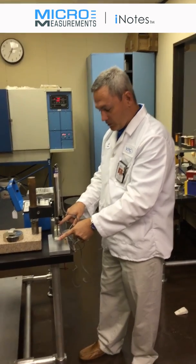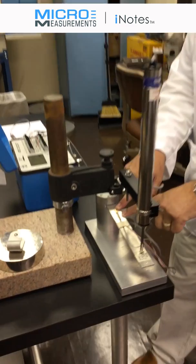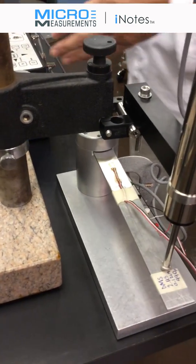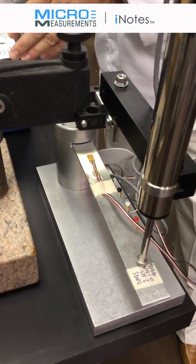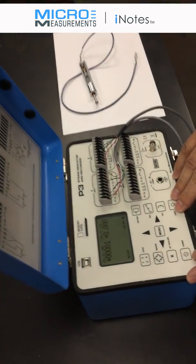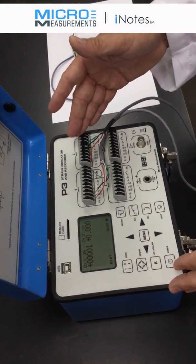I've also got one of our workshop beams that has one of our Micro-Measurements CEA series strain gauges mounted on it, and these two are connected into the model P3 strain indicator and recorder. I've got the strain gauge connected on channel 1 and the displacement HS100 connected on channel 2.